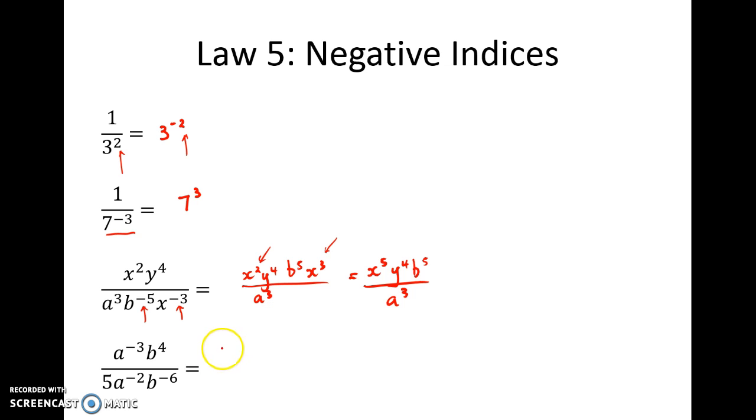In our final problem here we've got a to the negative 3 and b to the power of 4. Now b to the power of 4 is fine, we'll keep that as a positive indice and I'll keep it up the top. But I'm going to actually swap the a to the negative 3 down the bottom and I'll just put it out the front initially. So by moving it down the bottom I change the indice from a negative to a positive. The 5 has already got an index of 1 and it's a positive index so I'm going to leave the 5 down the bottom as well.